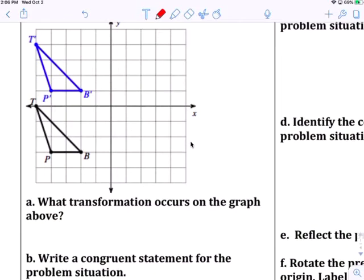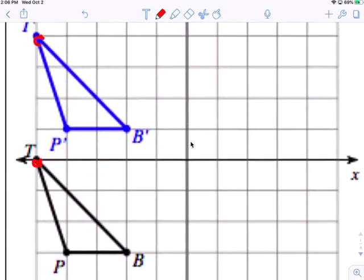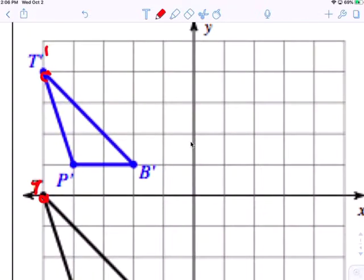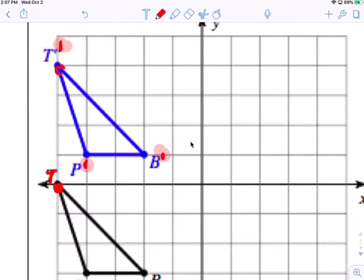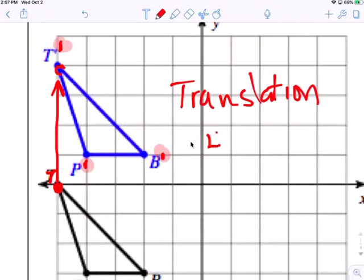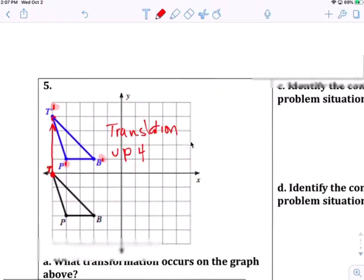Number one, what transformation occurred? These two shapes stayed the same. This is just T, and this on your paper should have been T prime. This is P prime and B prime. Anytime it has the prime, it is the image part. The pre-image is the one without it. So this is a translation of four up because the shape stays the same.